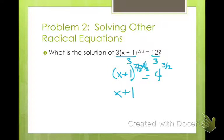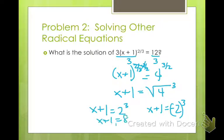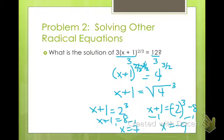So x plus 1 equals 4 to the 3/2 power. I'm going to rewrite that in radical form — that's the square root of 4 cubed. The square root of 4 is 2, but it can also be negative 2, so I'm going to set up two equations: 2 cubed and x plus 1 equals negative 2 cubed. So 2 cubed is 8, meaning x plus 1 equals 8, giving x equals 7. And for the negative case, that's negative 8, giving x equals negative 9. When you're taking a square root, you always have a positive root and a negative root — don't forget that.